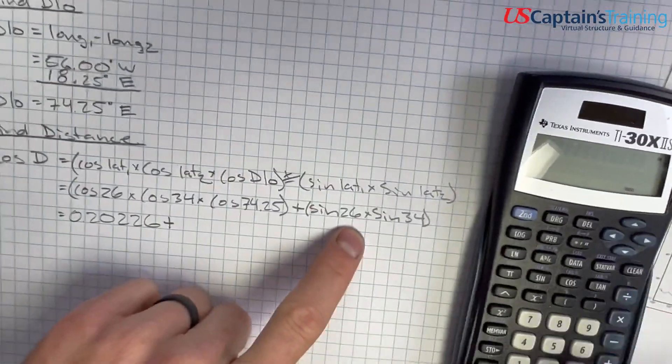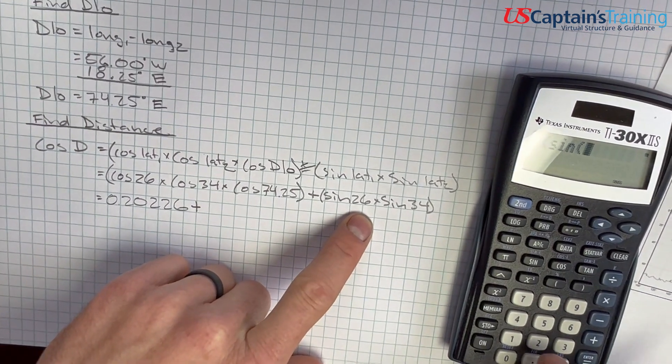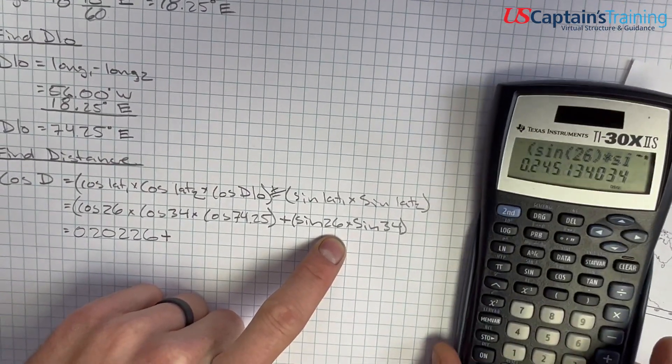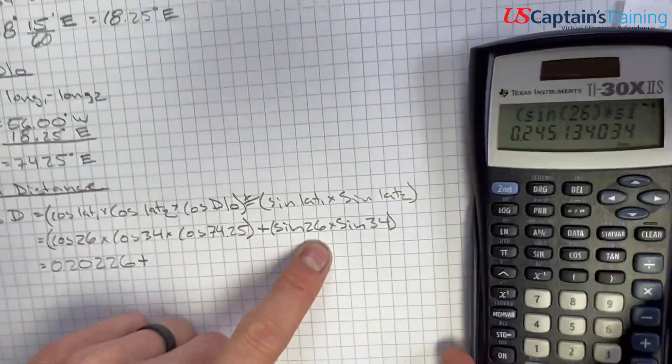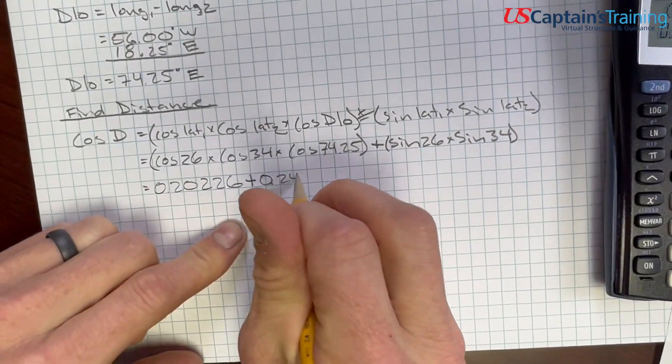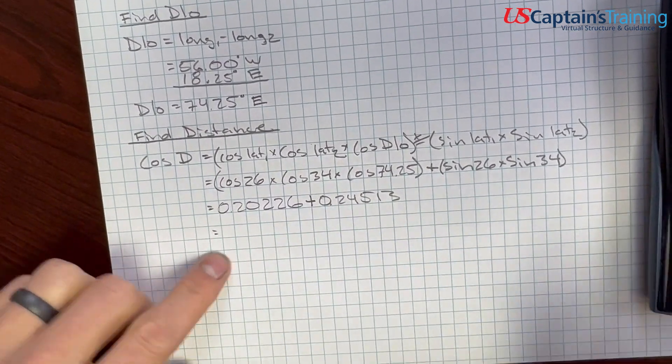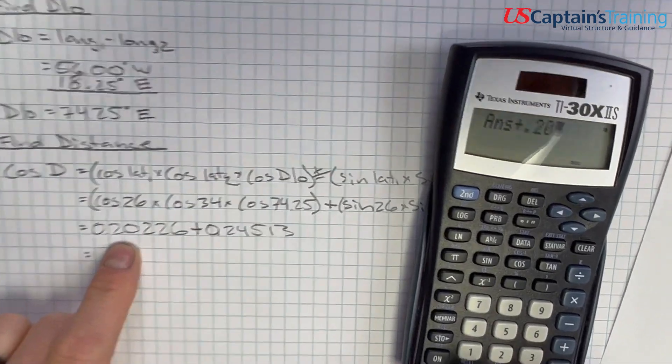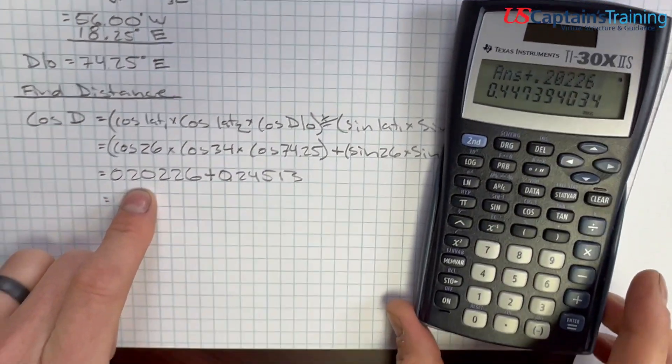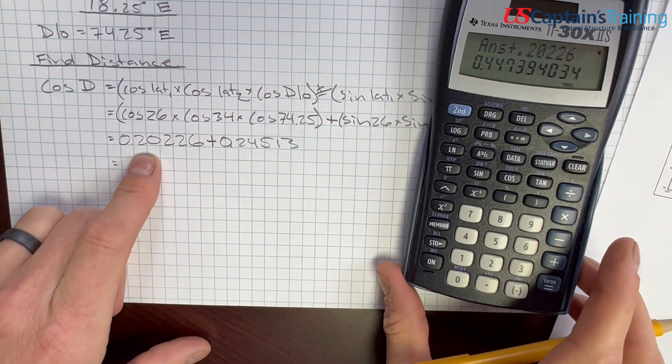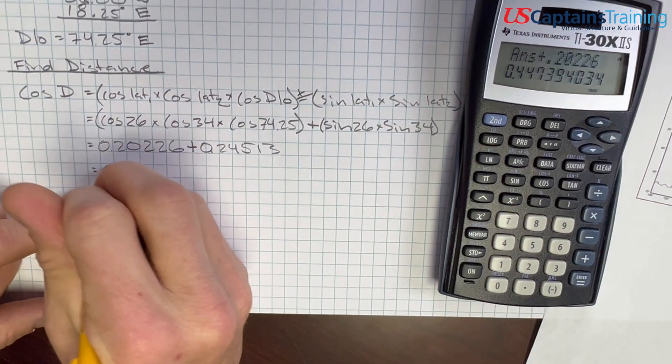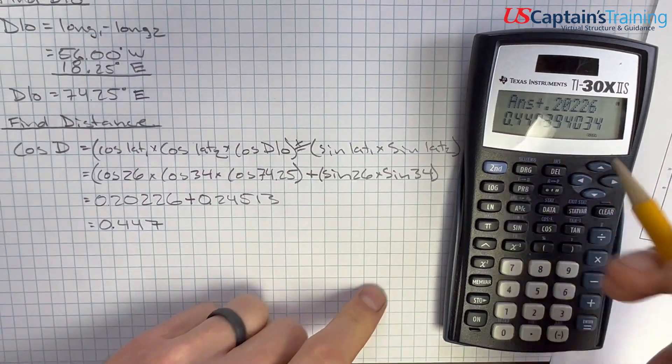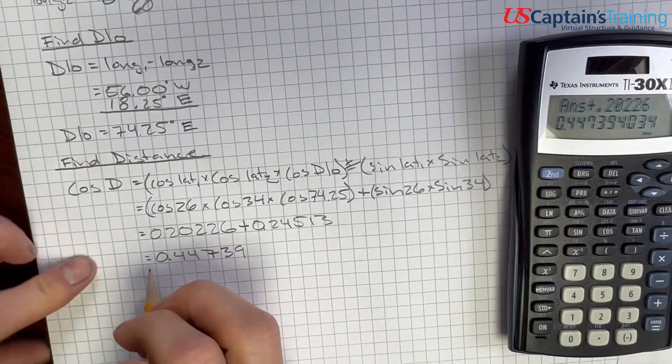Open, sine 26 close, times sine 34 close, enter. 0.24513. Let's add these together. 0.20226 plus 0.24513 equals 0.44739. And remember, this is the cosine of distance.